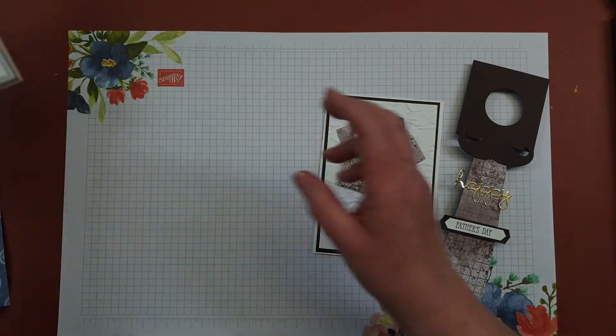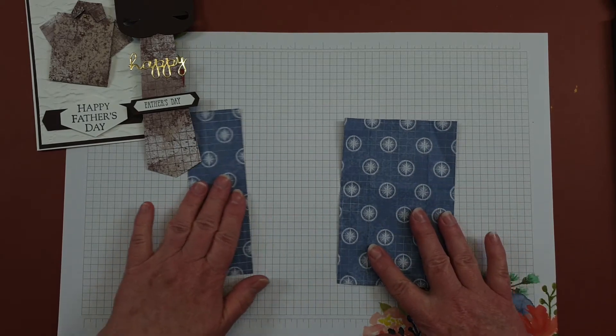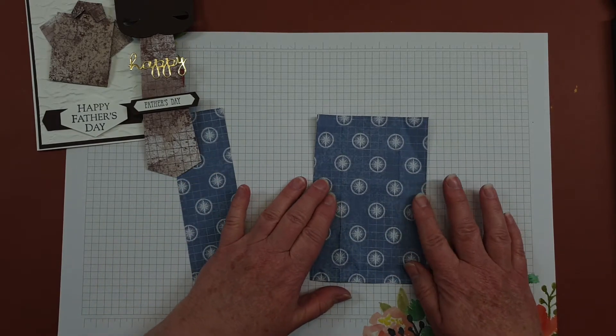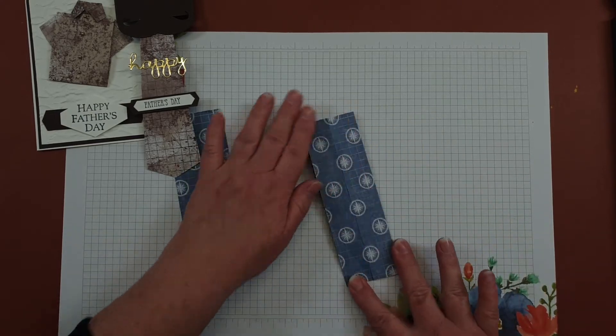Start with a six by six piece of designer series paper and you're going to cut a strip of two inches, and then you've got a four inch piece. You're going to fold your piece of paper in half.